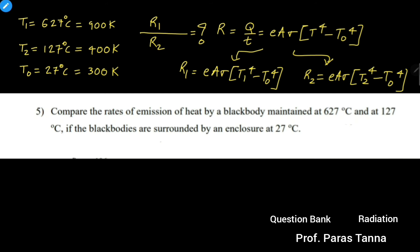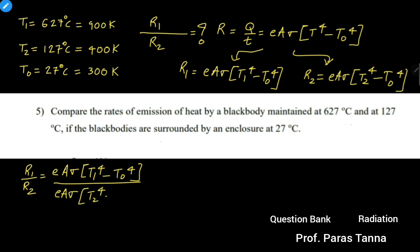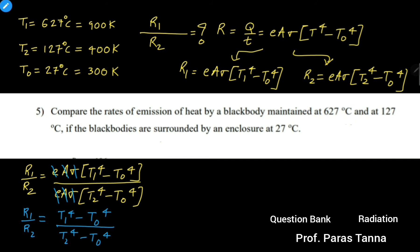So simply we have to find out the ratio R1 to R2. R1 divided by R2 equals EAσ(T1⁴ − T0⁴) over EAσ(T2⁴ − T0⁴). E, A, and σ are all common and get cancelled, giving us R1/R2 = (T1⁴ − T0⁴) / (T2⁴ − T0⁴).